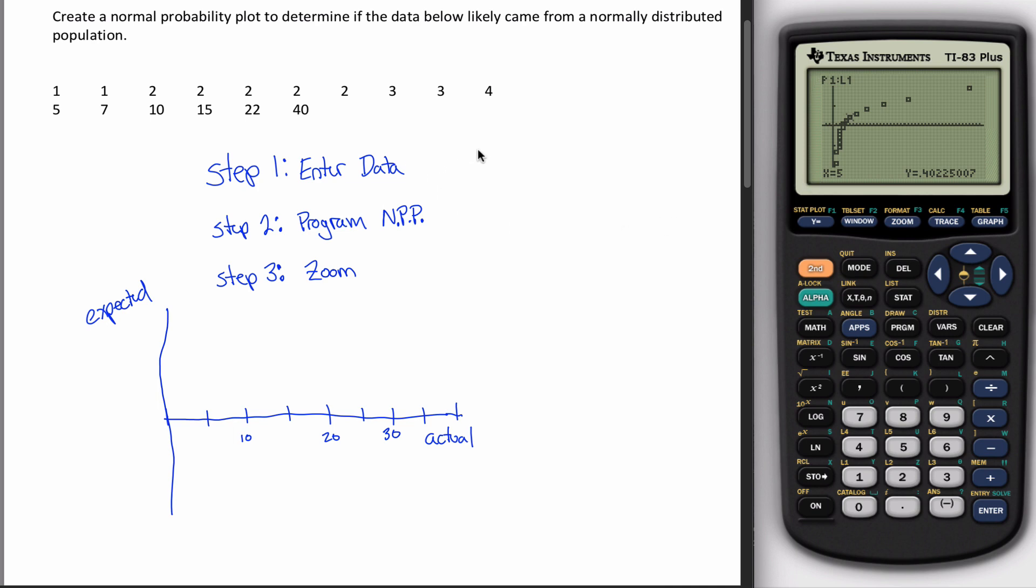So when you're looking at your normal probability plot, you just ask yourself the question, is data maybe approximately linear? Meaning, when you look at your normal probability plot, does it,